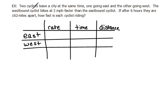This problem says two cyclists leave a city at the same time, one going east and the other going west. The westbound cyclist bikes at 3 miles per hour faster than the eastbound cyclist. If after 6 hours they are 162 miles apart, how fast is each cyclist riding?